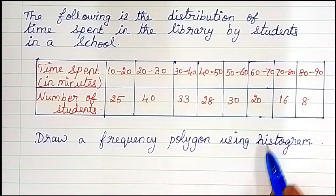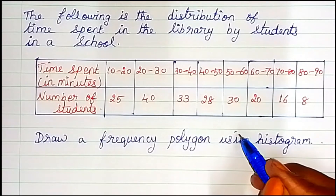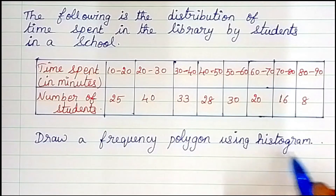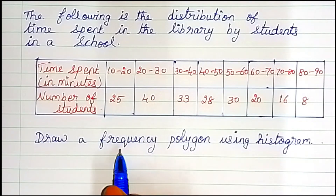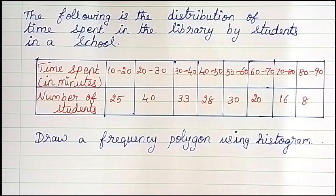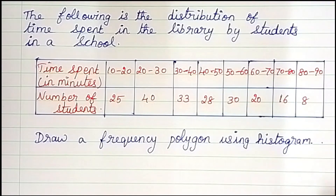Draw a frequency polygon using a histogram. So first, histograms — that is the frequency polygon. So, one histogram.